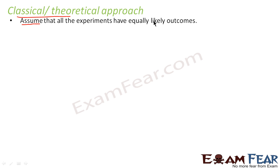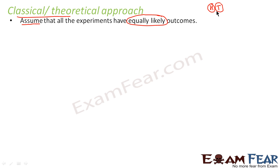The key assumption in the classical approach is that all experiments have equally likely outcomes. For example, when we consider a coin flip, head and tail are equally likely. The probability of head is always 1/2 and the probability of tail is always 1/2 - these are equally likely outcomes.